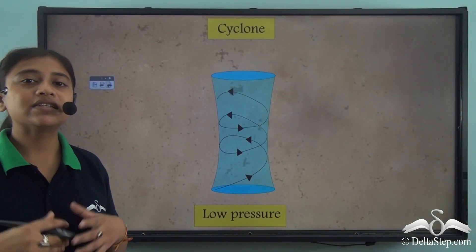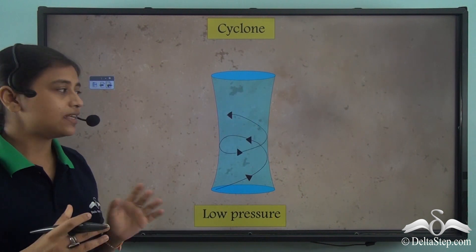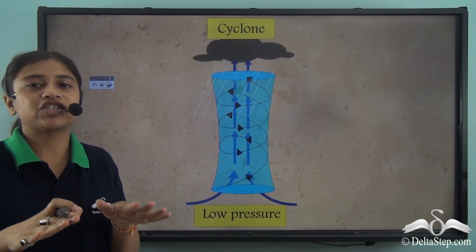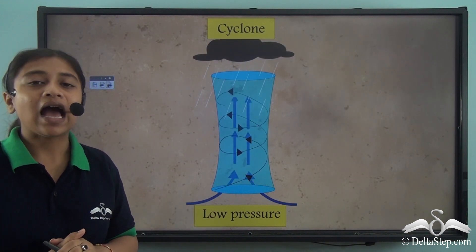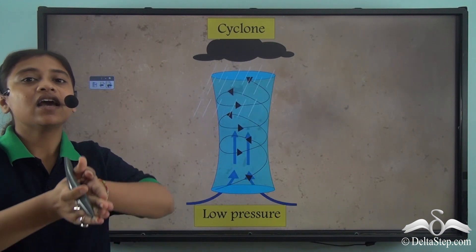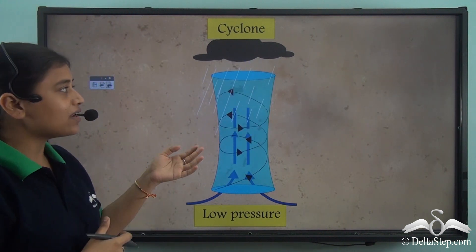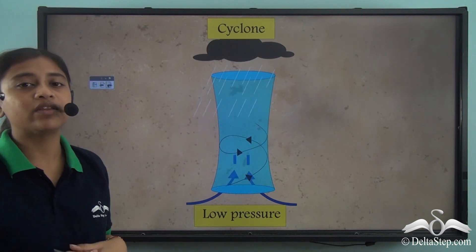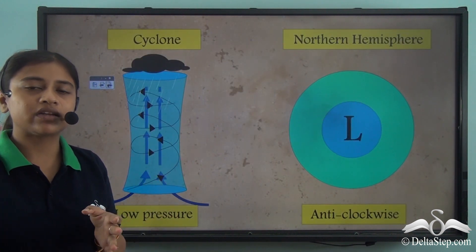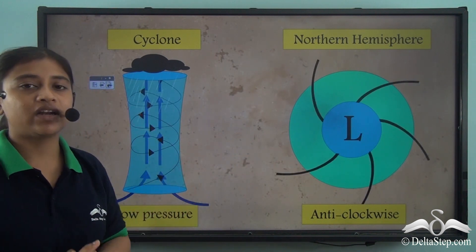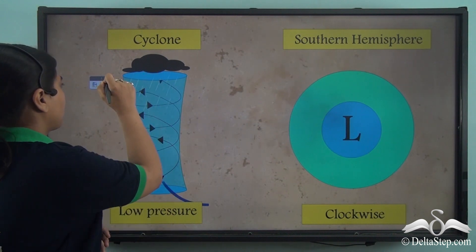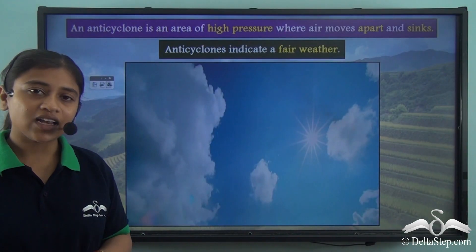In a cyclone, the winds come together and meet in a low pressure area at the surface of the earth, moving in a spiral way. They rise up to form clouds, which then bring heavy rainfall over the places they pass through. In the northern hemisphere, cyclones move in an anti-clockwise direction, and in the southern hemisphere in a clockwise direction.